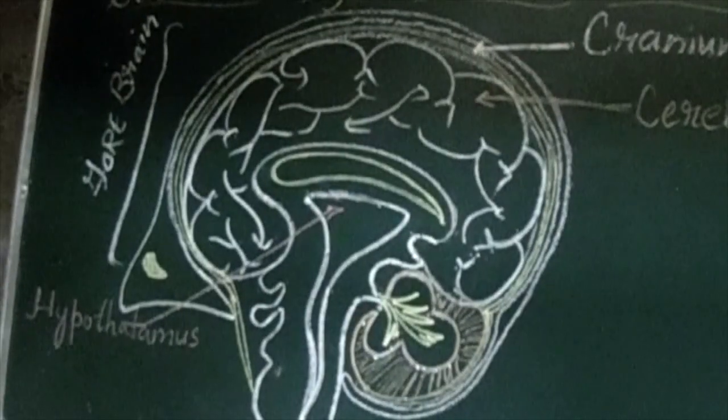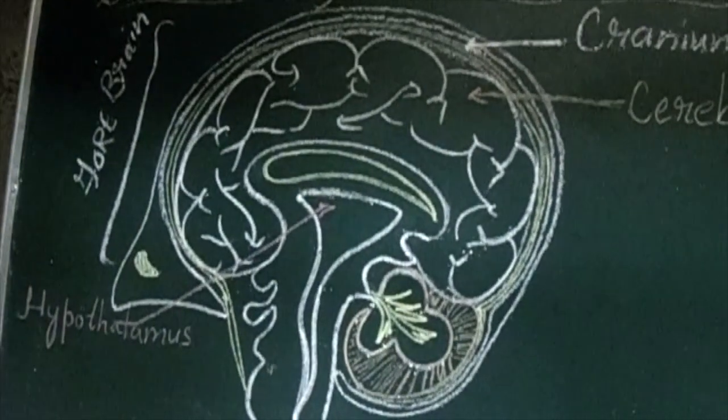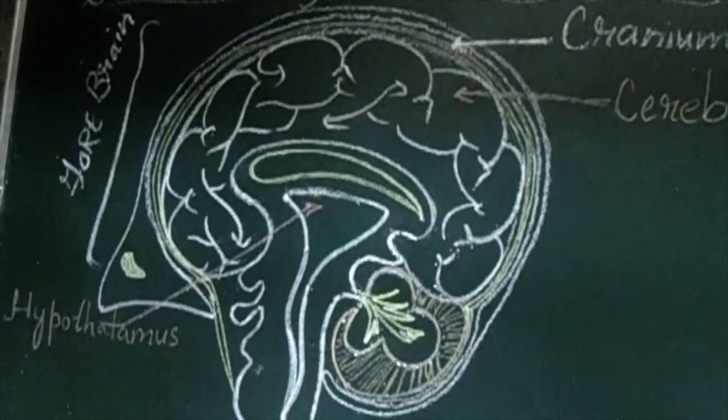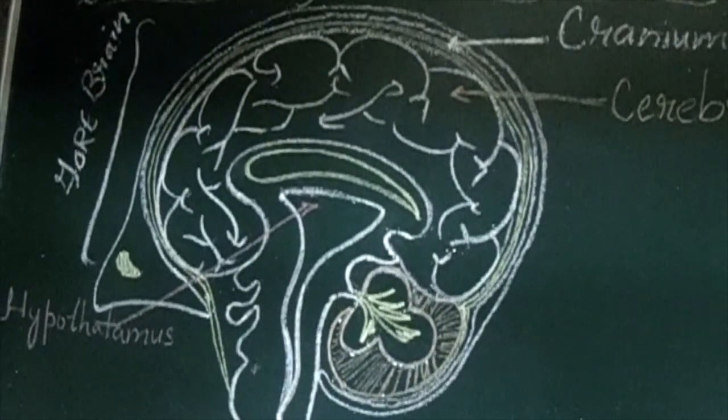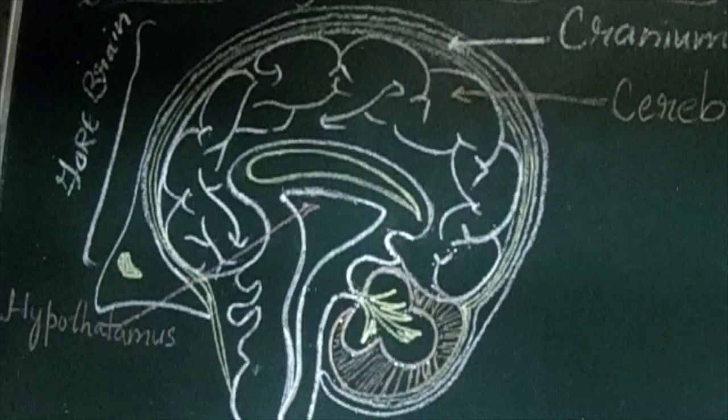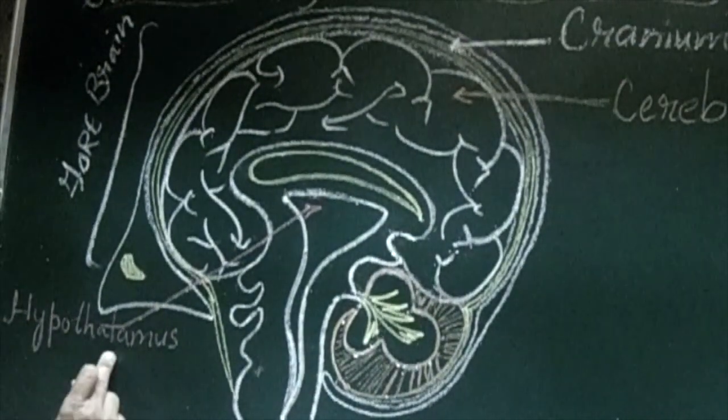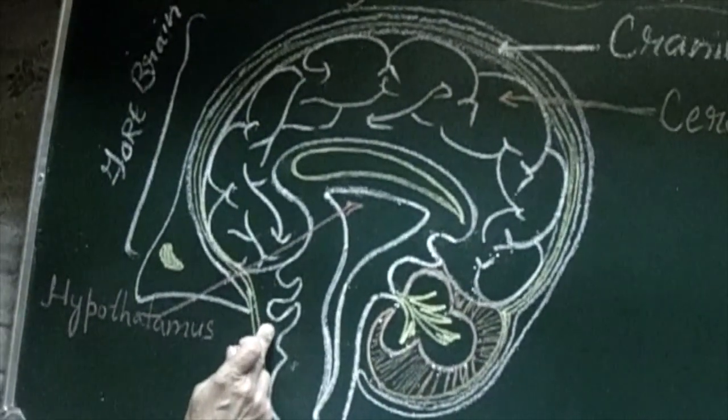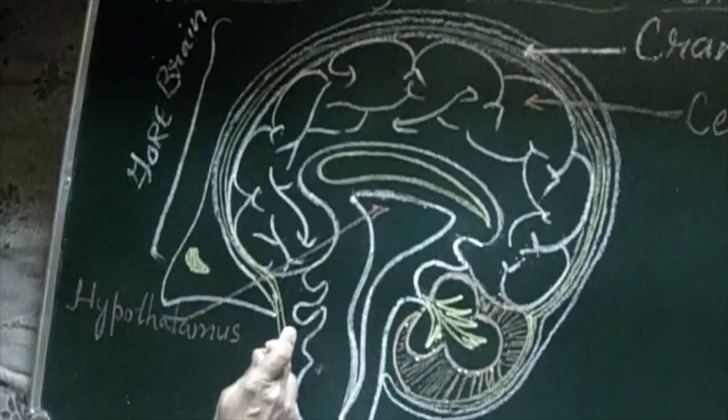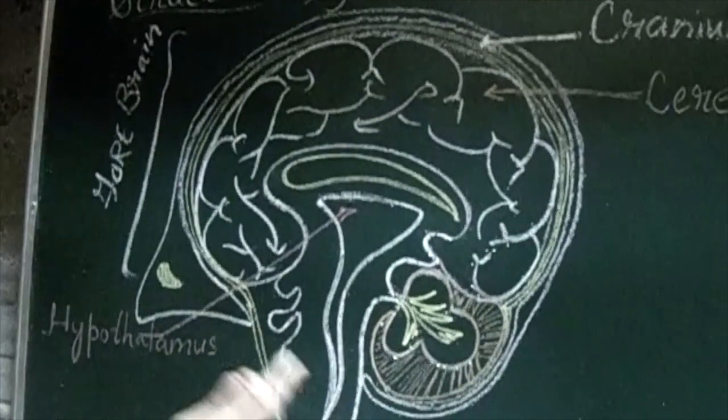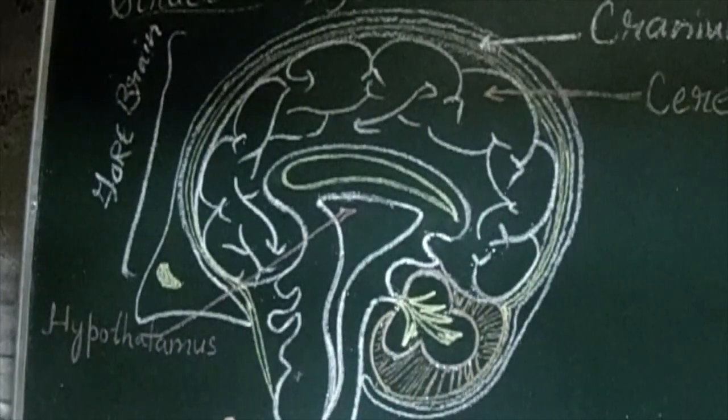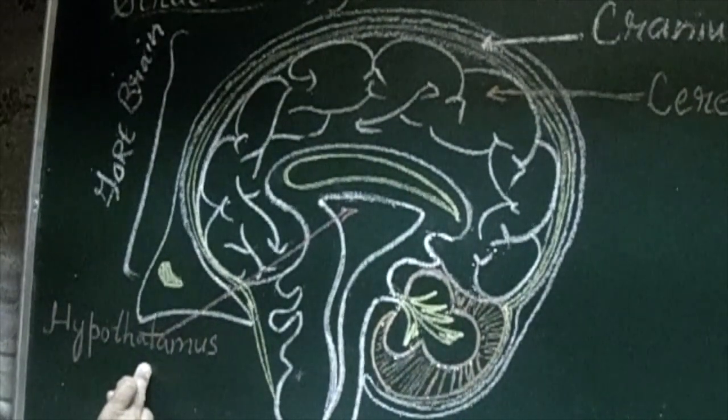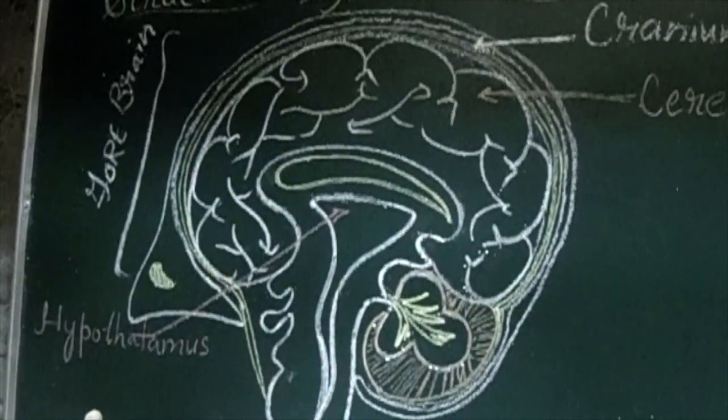So hypothalamus, hypothalamus can control pituitary gland. We know that pituitary gland is the master of all other glands in our body. But pituitary gland is controlled by hypothalamus. So this is our forebrain.